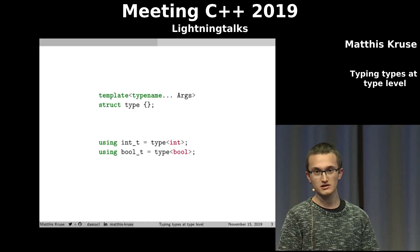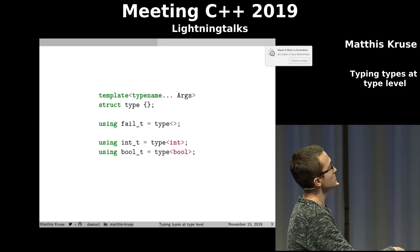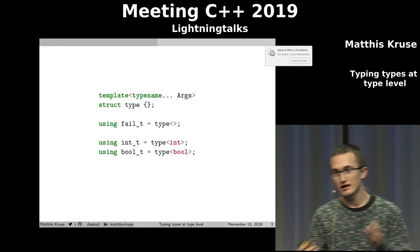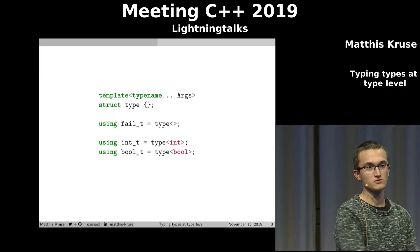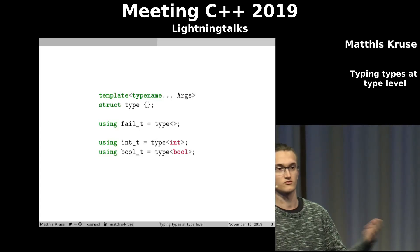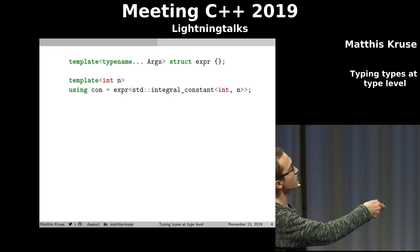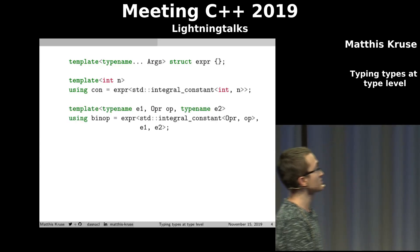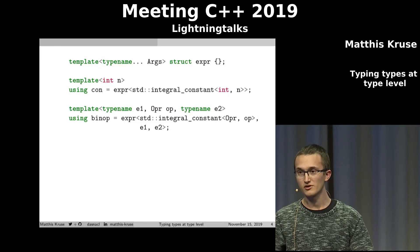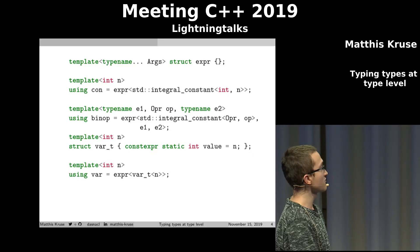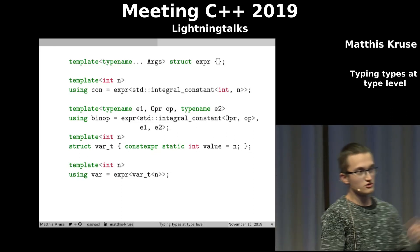Now, types are realized simply as types, because we are working with types. And we also need a fail type, because it can happen that the user might program some ill-formed program. For example, if they want to add a Boolean value to an integer value, then we should fail. Now expressions are similarly written down — constants are basically just an integral constant in the parameter list. For binary expressions, we have an enum class containing all the operators: plus, minus, and equals. And for variables, we also need an integral constant, which needs to be different because we need to distinguish usual constants.